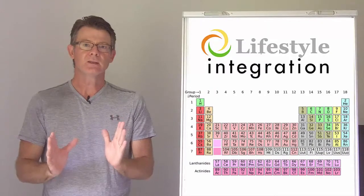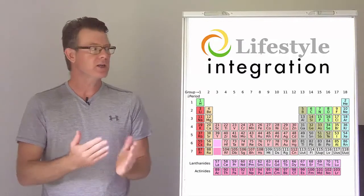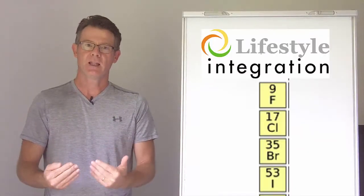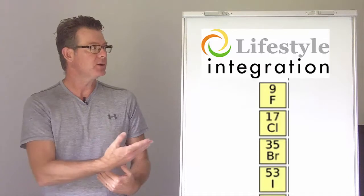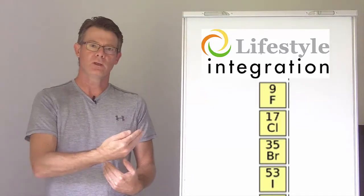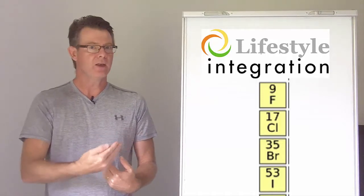Now the way that this works is if you look at the periodic table of the elements, you come across this column called halogens, and you can see here that you've got fluorine on top, then chlorine, then bromine, and then iodine.